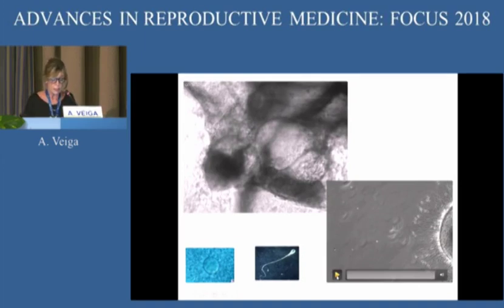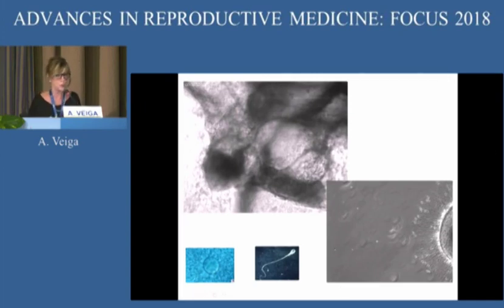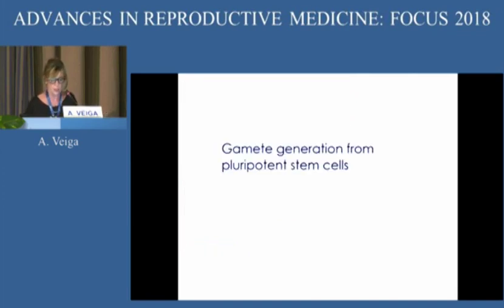What this slide also shows is that these pluripotent stem cells can be converted into gametes. If they are pluripotent, they have to be able to be converted into oocytes and into sperm, and this is what we are talking about in this presentation.